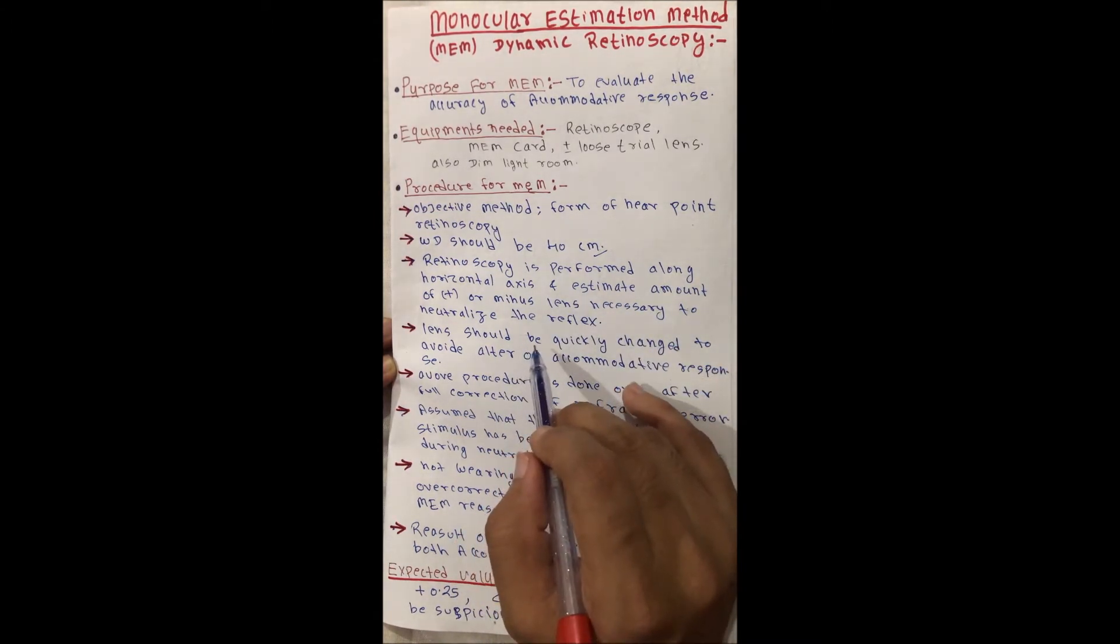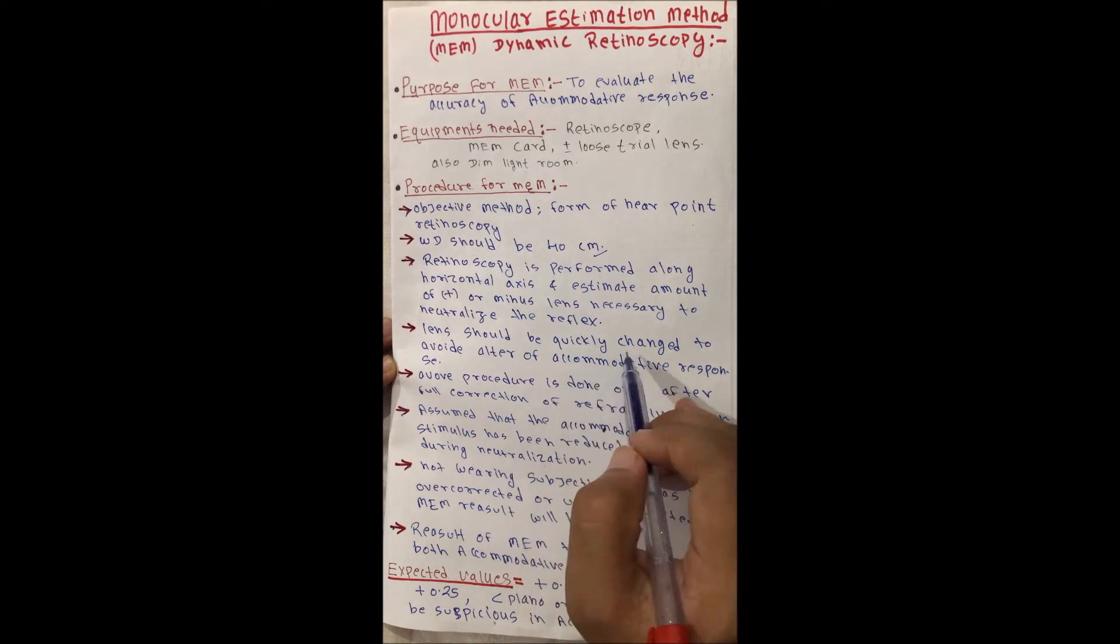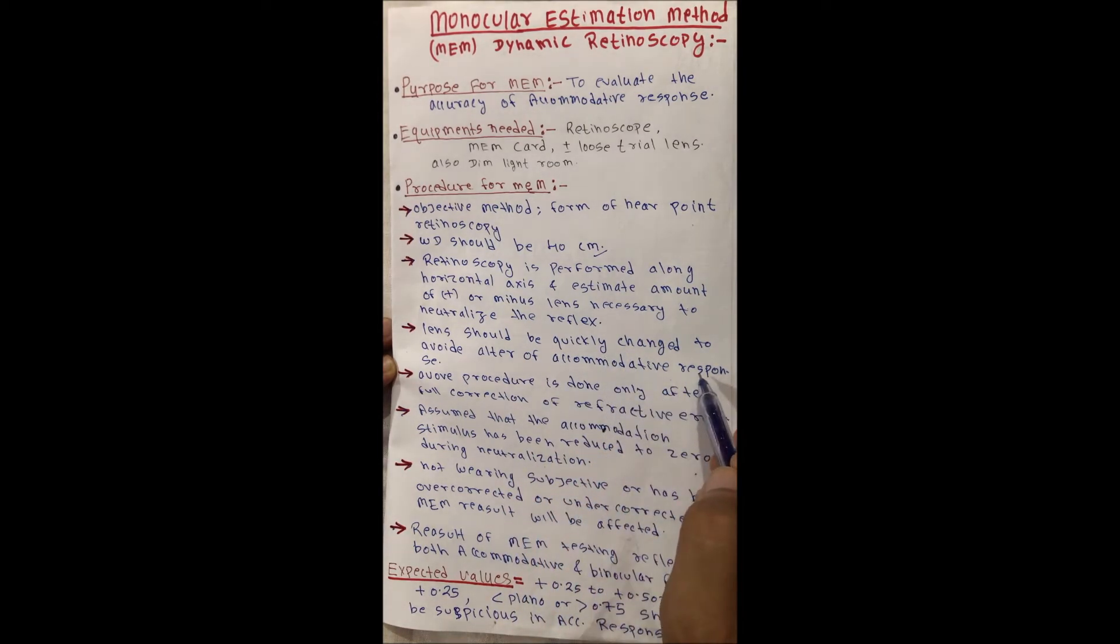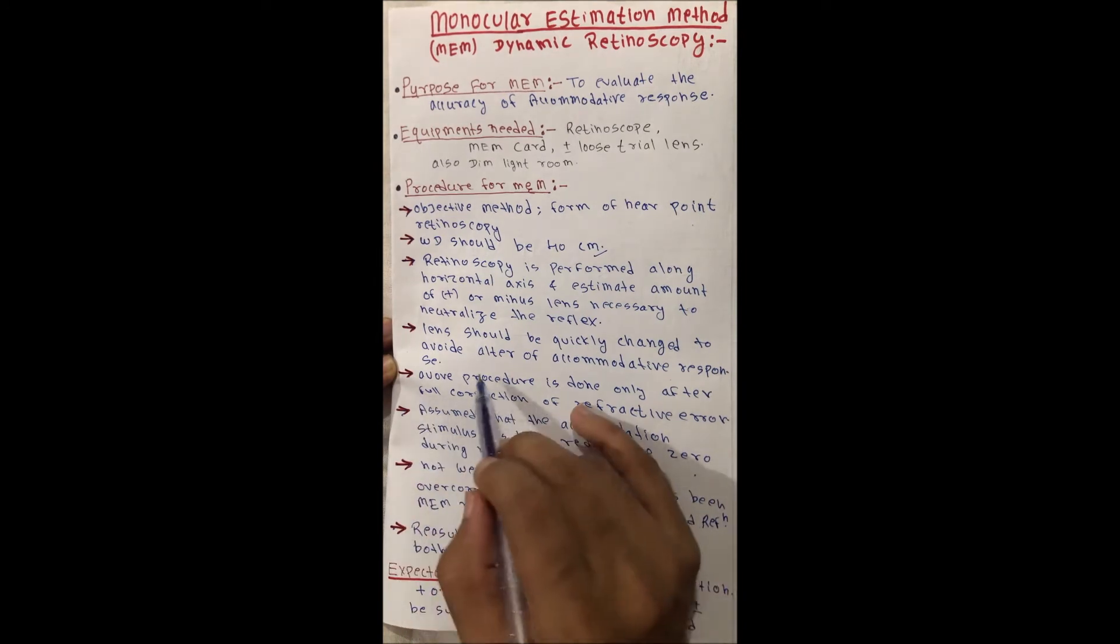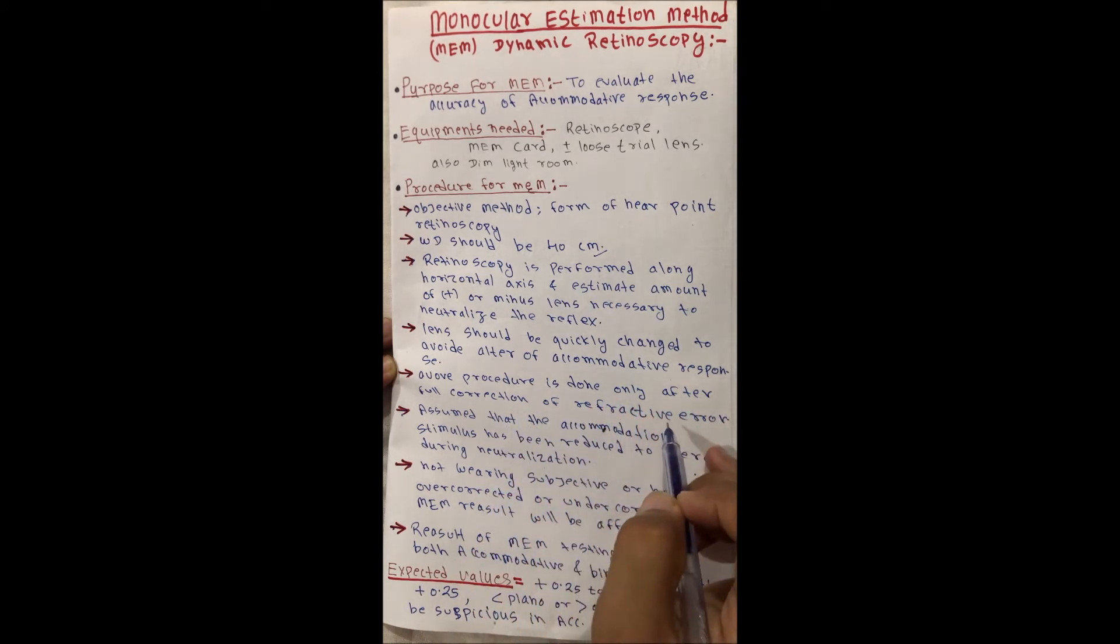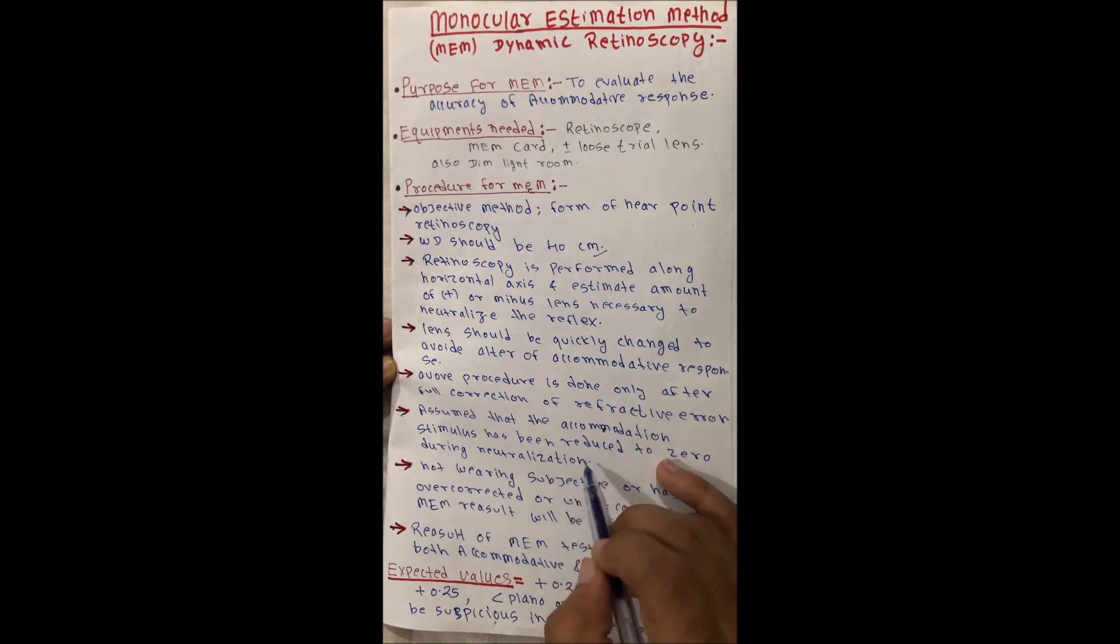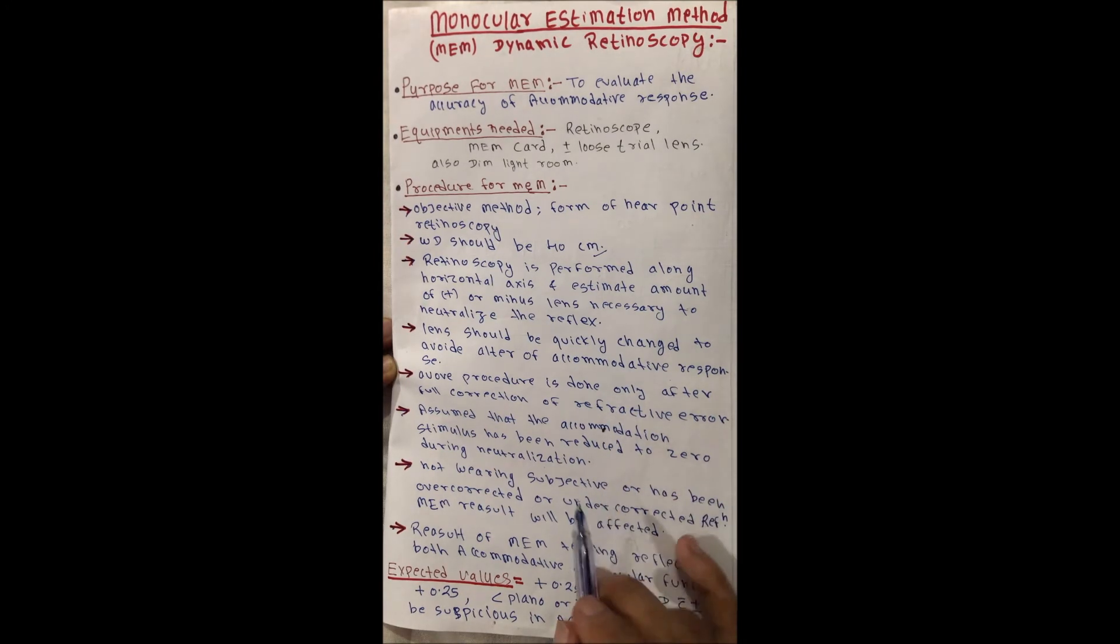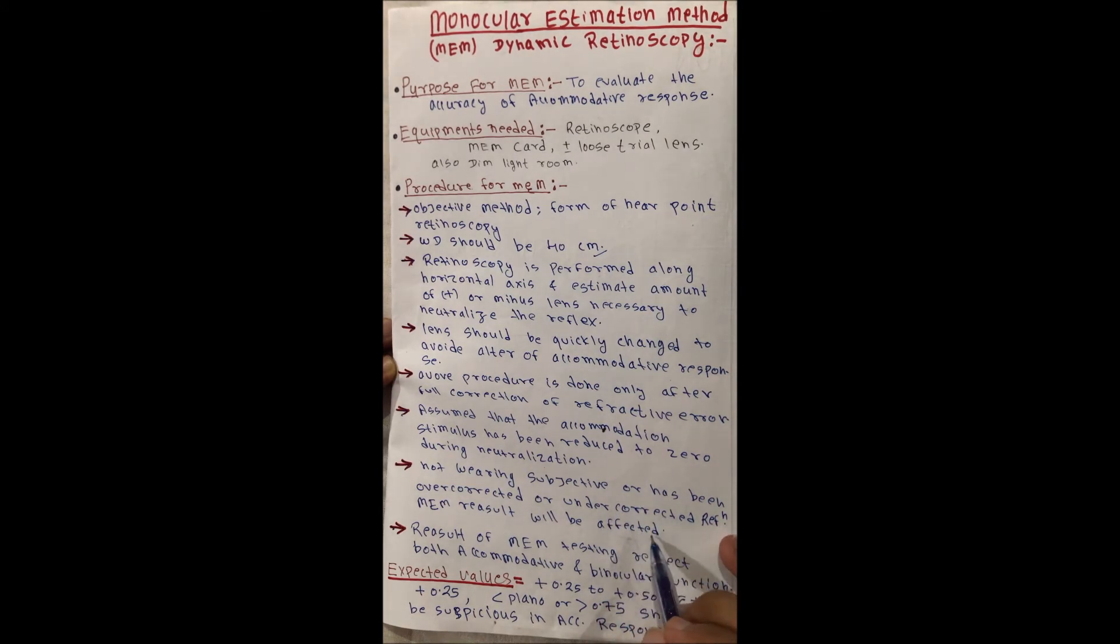The lens should be quickly changed to avoid alteration of accommodative response, and the procedure is done only after full correction of refractive error. Assume that the accommodation stimulus has been reduced to zero during neutralization. If patient's subjective refraction has been over-corrected or under-corrected at refraction, MEM result will be affected.